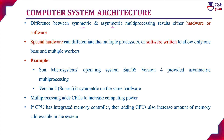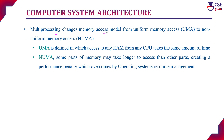The main difference between symmetric and asymmetric multiprocessing results from either hardware or software usage. Special hardware can be installed to differentiate multiprocessors, or software can be installed to designate one processor as boss and others as workers. For example, Sun Microsystems' Sun OS version 4 provides asymmetric multiprocessing, while version 5, Solaris, is symmetric on the same hardware. Multiprocessing adds CPUs to increase computing power. If CPUs have an integrated memory controller, adding CPUs also increases the amount of memory in the system.